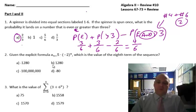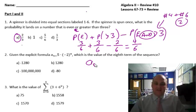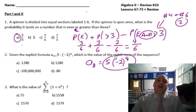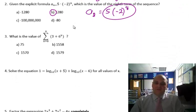Given the explicit formula a_n equals 5 times negative 2 to the n, which is the value of the 8th term. We're just going to plug in n = 8. When it's explicit, you do a_8, and that's going to be 5 times negative 2 to the 8th. Just throw that in your calculator, and it is B. I just did these ahead of time to save you some time.